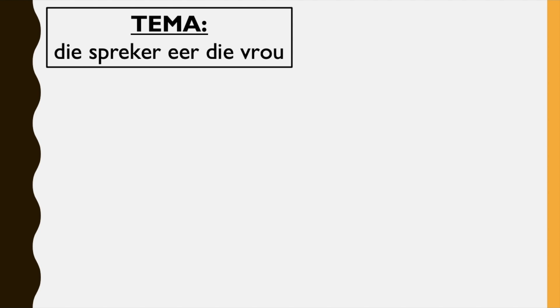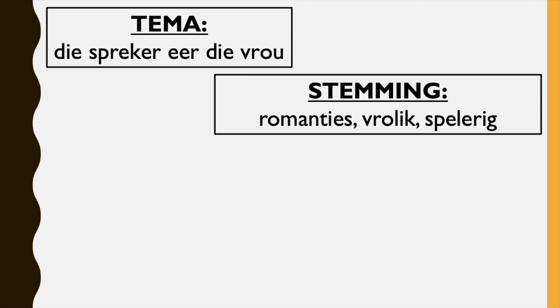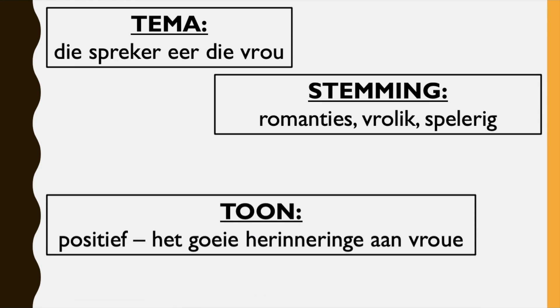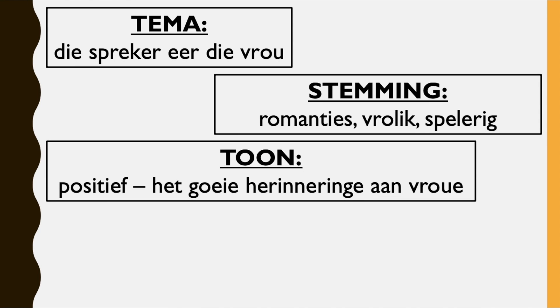Die ma — die spreker eer die vrou, the speaker is honoring women. Stemming is like the mood of the poem: romantisch (romantic), vroelik (happy), spelerig (playful). Doon is the tone, specifically the speaker's tone: positief — het goeie herinneringe van vroue — it's positive, he has good memories of women.